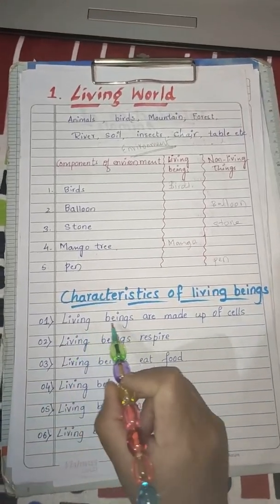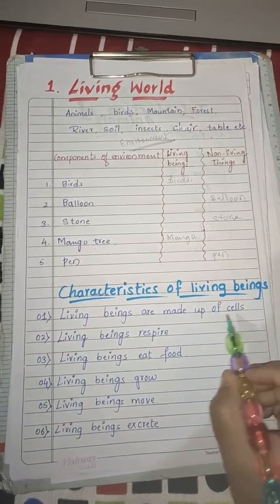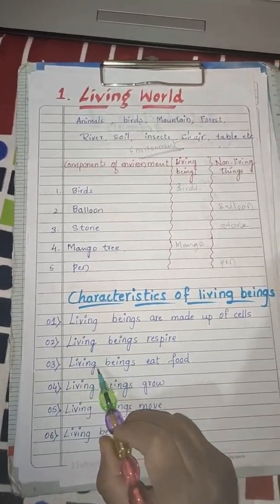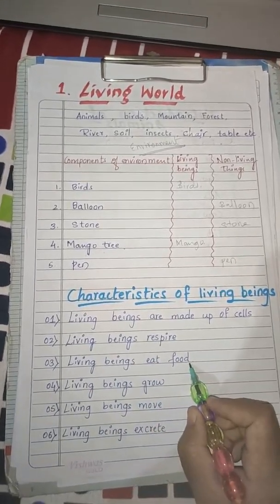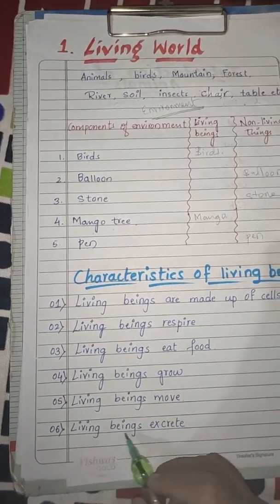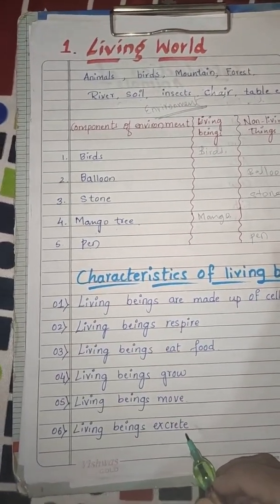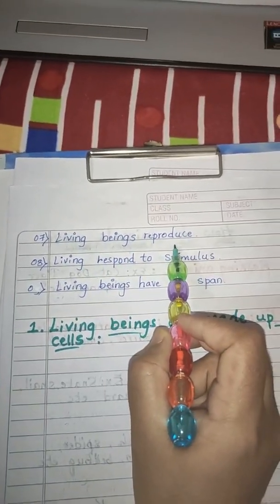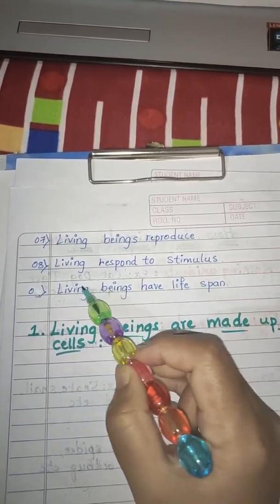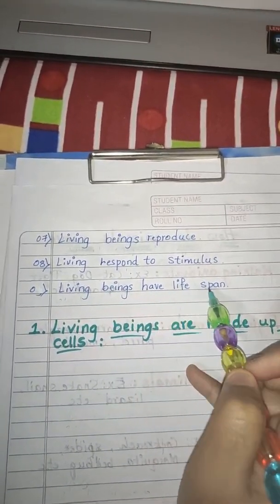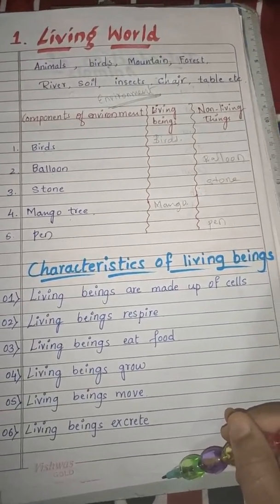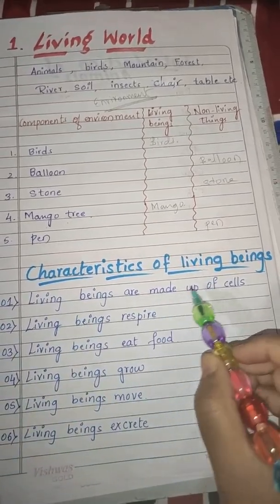First, living beings are made up of cells. Second, living beings respire. Next, living beings eat food. Living beings grow. Living beings move. Living beings excrete. Living beings reproduce. Living things respond to stimulus. Living beings have a lifespan. These are some characteristics of living beings, and we will discuss them one by one.